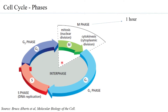Consider a mammalian cell: the M phase, where mitosis and cytokinesis take place, lasts only about 1 hour. In a 24-hour cell cycle, the cell exists mostly in interphase — about 23 hours. So the actual time the cell takes to divide is only 1 hour, but the time it takes to prepare itself for that 1 hour is 23 hours.